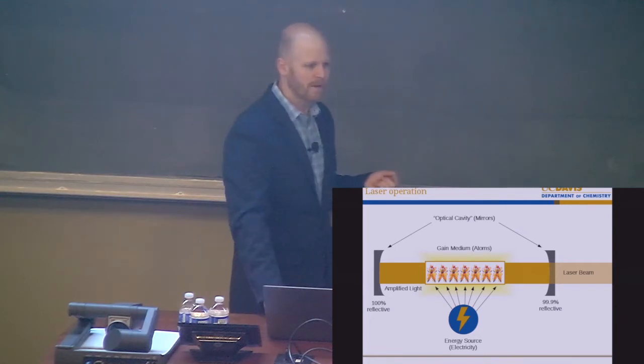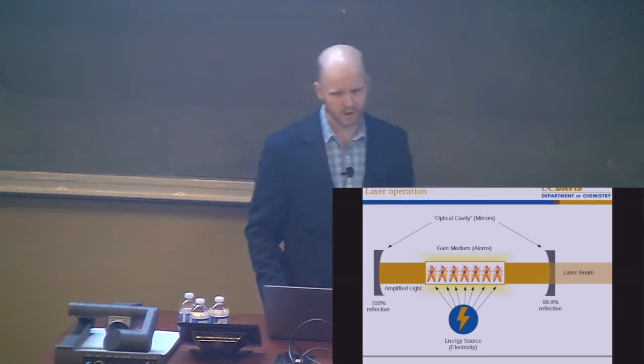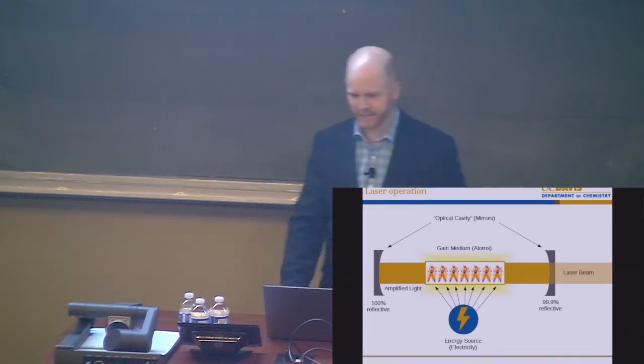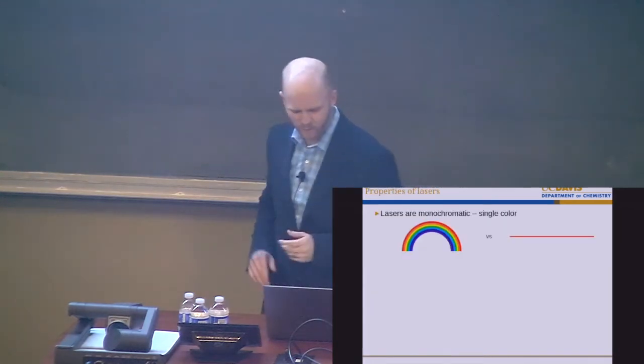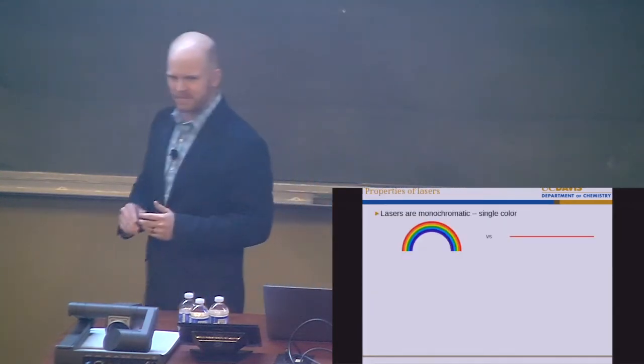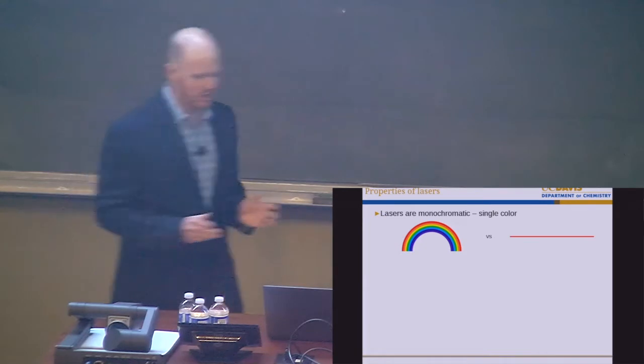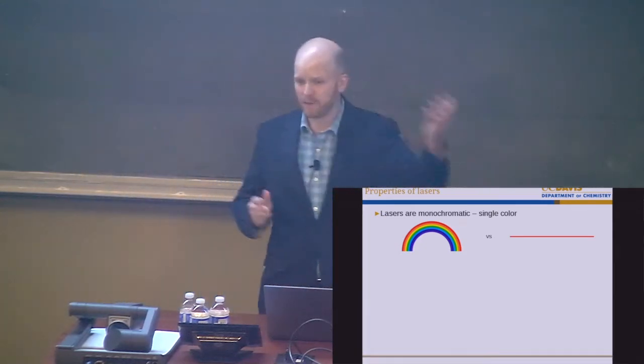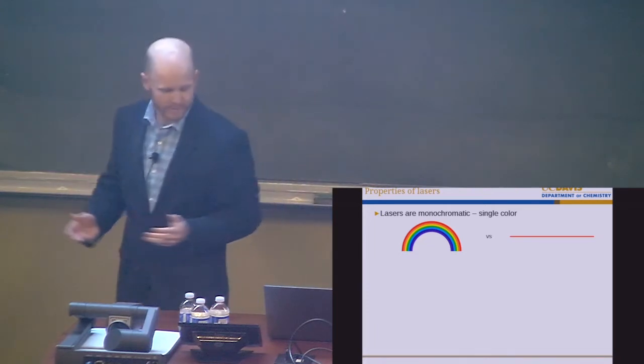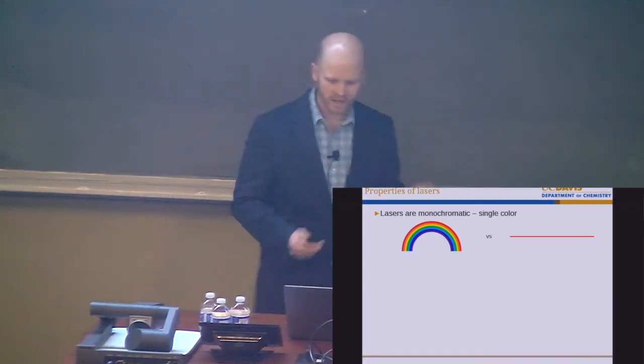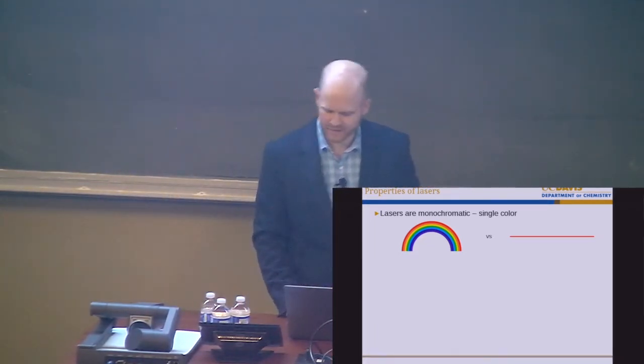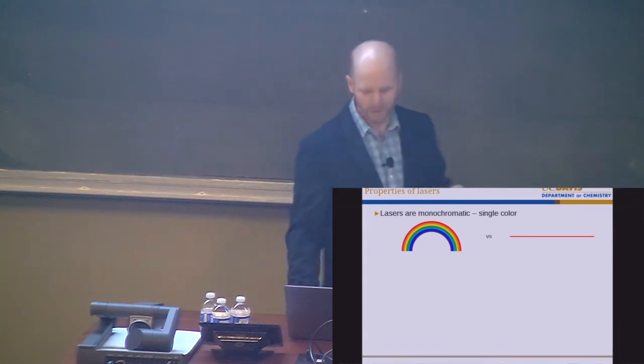And so lasers are basically amplifiers for light. And they have a few special properties, which makes them really useful for science and technology applications. And I want to just highlight a couple of them. One, lasers are monochromatic. So unlike a light bulb, the light bulbs in this room, which give off light kind of all across the rainbow, a laser has one color. And that's a very advantageous property for science.